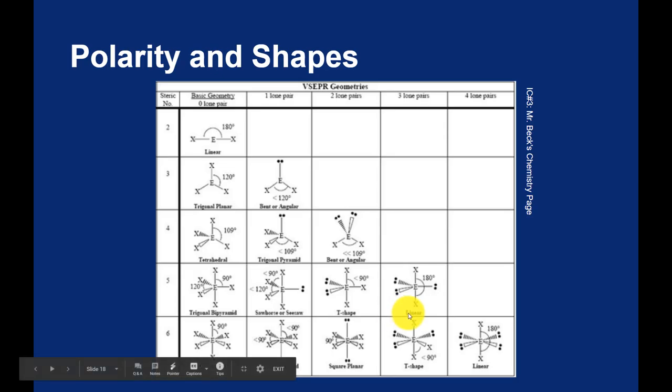But when you get to the linear shape with three lone pairs on the central atom, you actually go back to a symmetric shape. So even though there are lone pairs on the central atom, that's a nonpolar molecule.